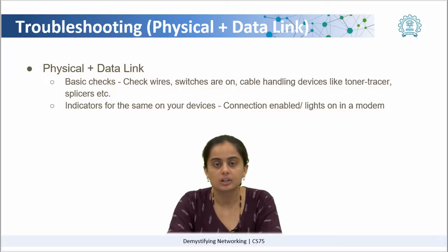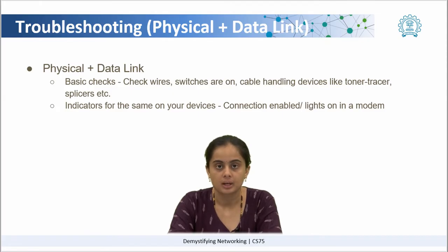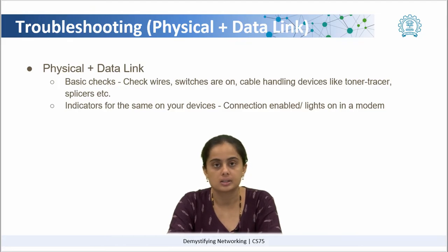Physical layer constitutes of all the tangible things that you can see, like switches, LED lights, connectors, etcetera. You have to do some basic checks like verifying the switches are turned on and connectors are connected in the right places.